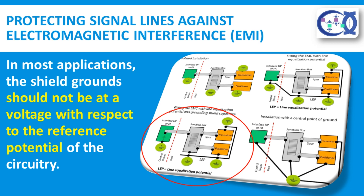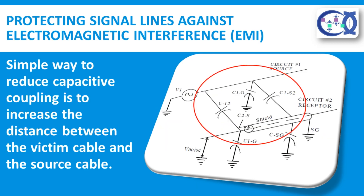Guard shields are normally used only in extremely sensitive applications or when high common mode rejection is required. The capacitance between two conductors is inversely proportional to the distance between them. Therefore, another simple way to reduce capacitive coupling is to increase the distance between the victim cable and the source cable. It is always a good idea to route noisy cables such as power input wiring, motor control wiring, and relay control wiring separate from quiet cables such as analog I/O lines, digital I/O lines, or LAN connections.